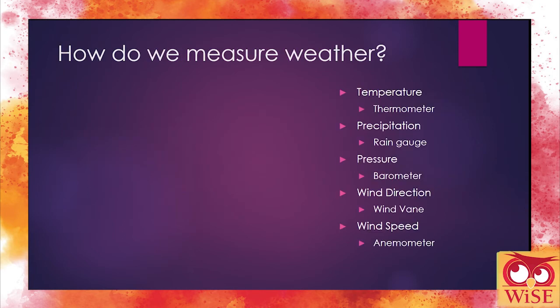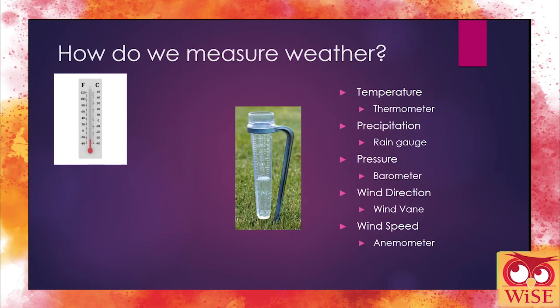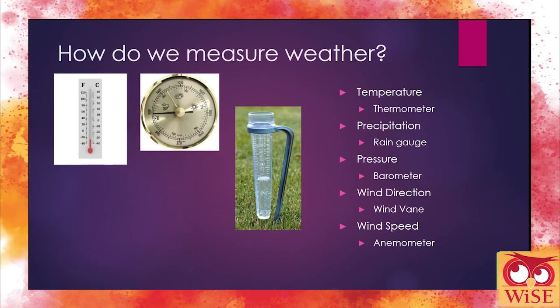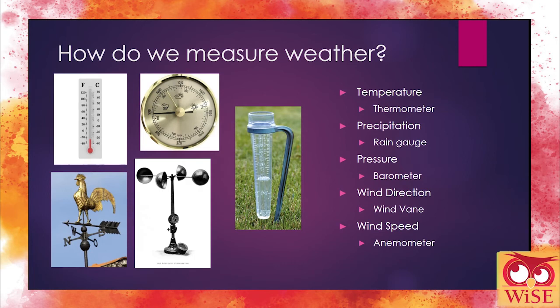Let's talk about how we measure weather. For temperature, a thermometer tells you what the temperature is in the current area. For precipitation, you have rain gauges, which collect the rain that falls, and you can read off the side to show how much rain has fallen in a certain period of time. For pressure, you have barometers. For wind direction, we have wind vanes, like the ones you see on top of barns. And for wind speed, you have something called an anemometer, which measures how fast the wind is blowing from hitting the little cups on it.